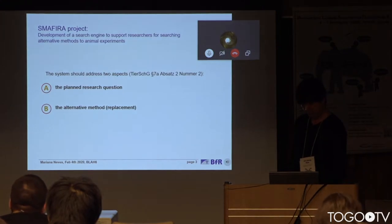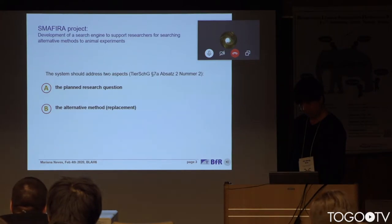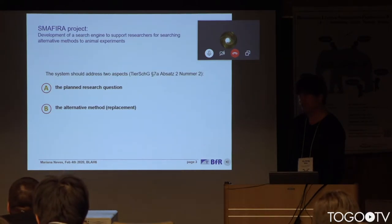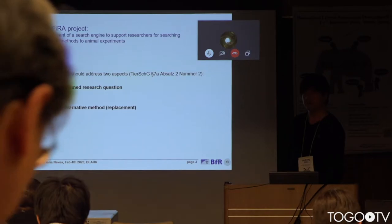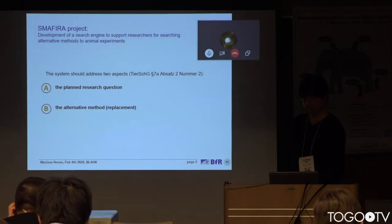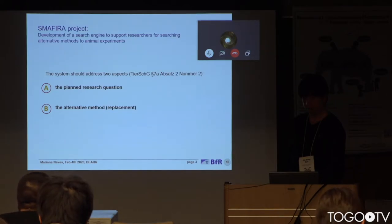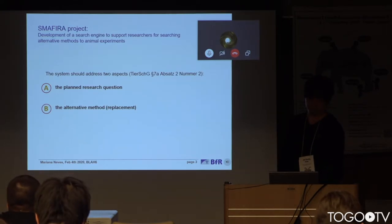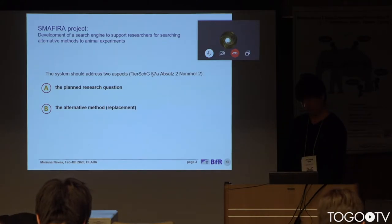The scope of our SMAFERA project is to develop a search engine to support researchers in finding these alternative methods. Following the statement of German laws as indicated in this slide, there are two important aspects when searching for a potential alternative method: (A) the planned research question — a publication describing a potential alternative method should address the same research question inputted by the user, currently an existing publication from MEDLINE; and (B) the alternative method should comply with one of the 3R principles. Currently, we are addressing only the replacement principle.